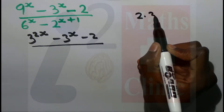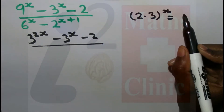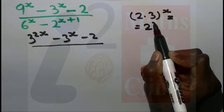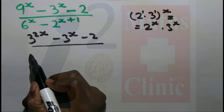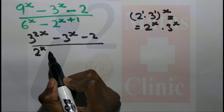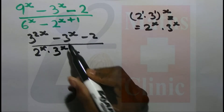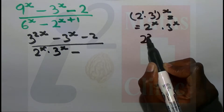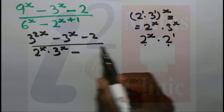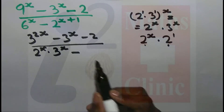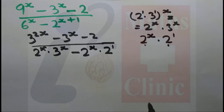6 to the x minus 2 times 3. So 2 to the x. Then 6 to the x minus 2 to the x, times 2 to the x. So that gives 2 to the x plus 2 to the x times 2 to the 1, which simplifies to 2 to the x minus 2 to the x plus 1, so 2 to the x times 2 to the 1.